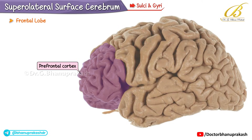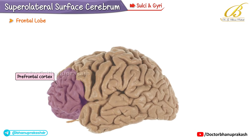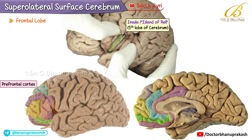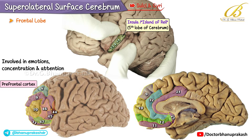The prefrontal cortex, covering the anterior part of the frontal lobe, contains Brodmann areas 8 to 14, 24, 25, 32, and 44 to 47. It is involved in emotions, concentration, and attention.